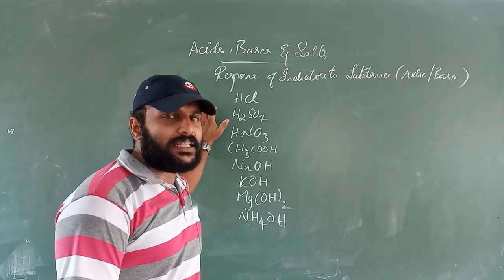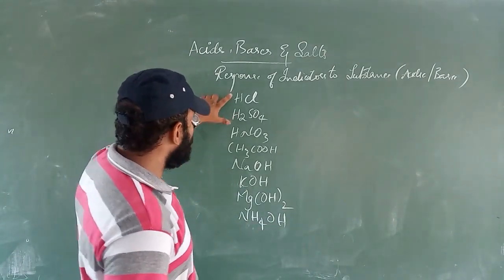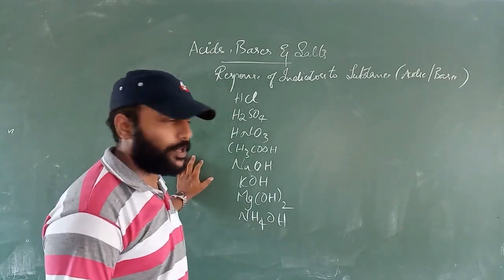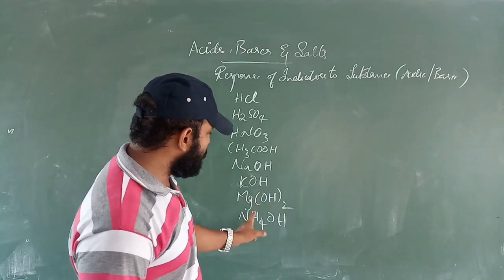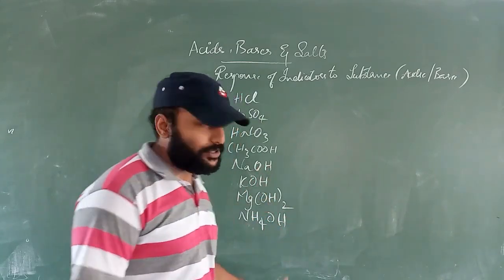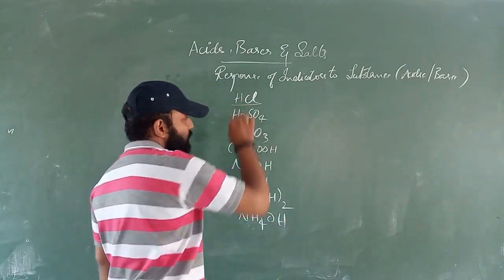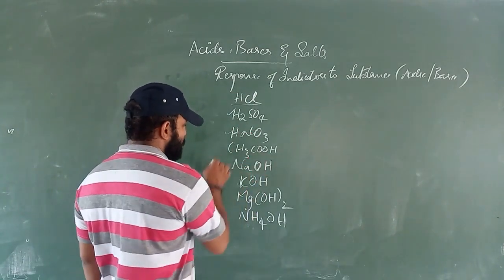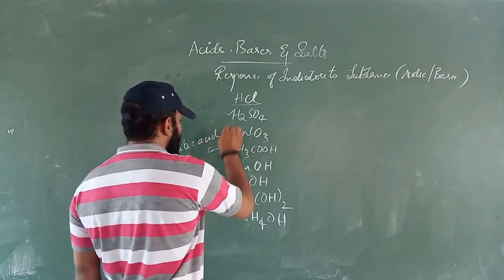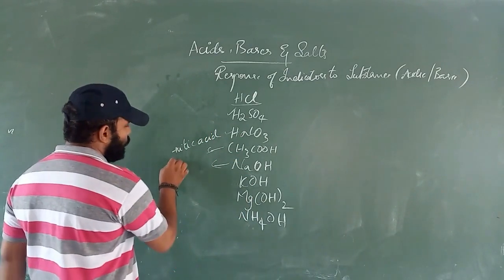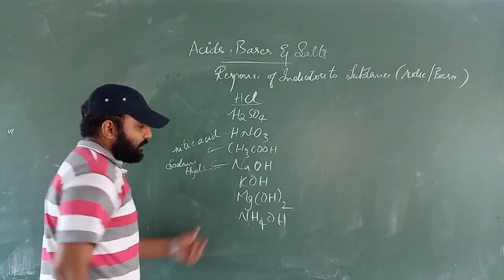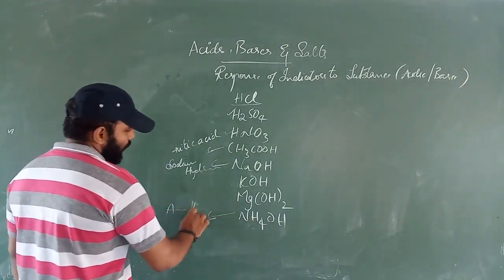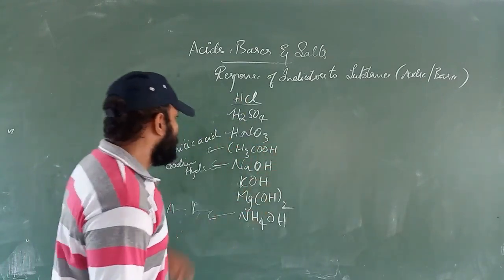If we observe: HCl is hydrochloric acid, H₂SO₄ is sulfuric acid, HNO₃ is nitric acid, and CH₃COOH is acetic acid — these are all acids. NaOH is sodium hydroxide, KOH is potassium hydroxide, Mg(OH)₂ is magnesium hydroxide, and NH₄OH is ammonium hydroxide — these are all bases.